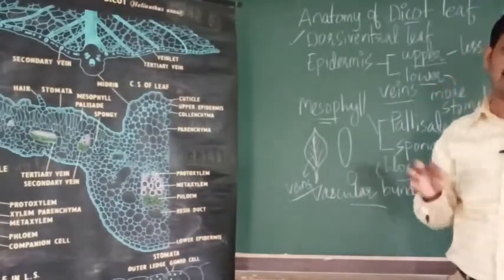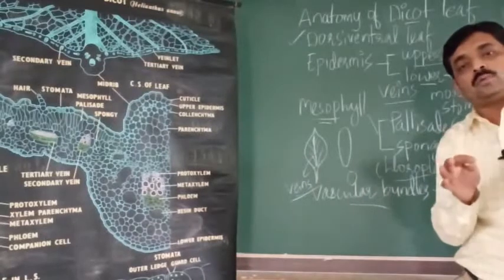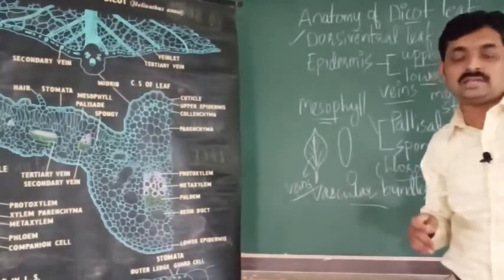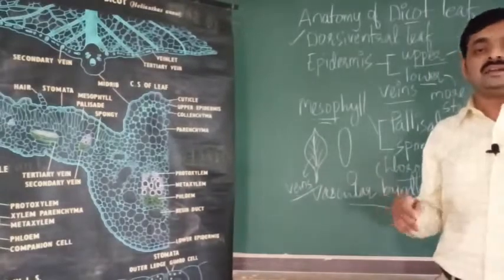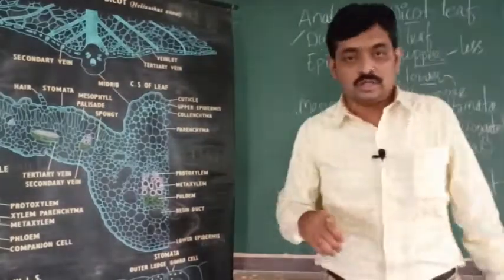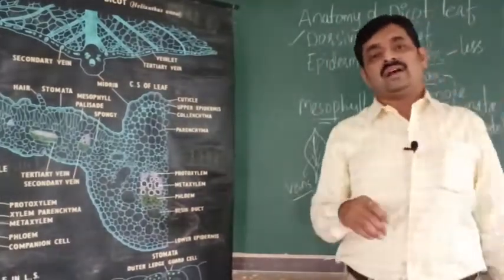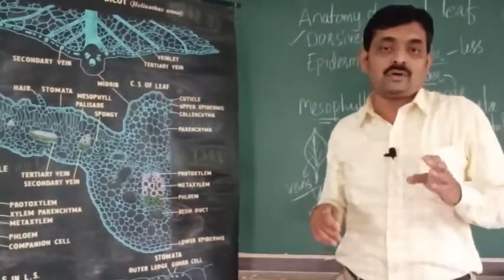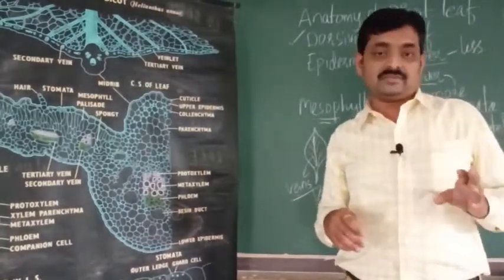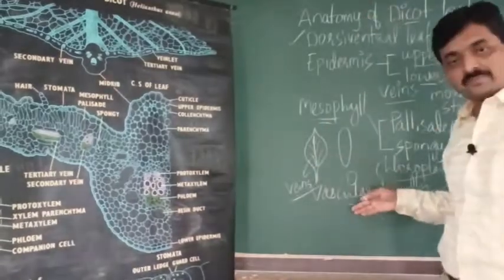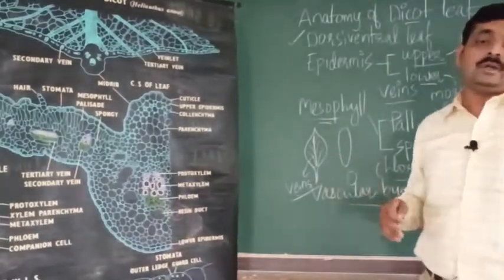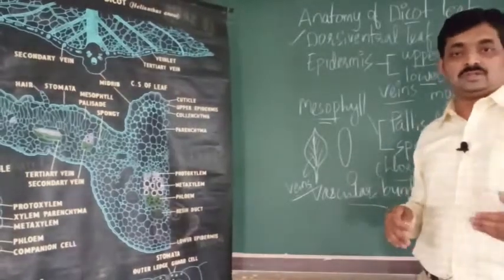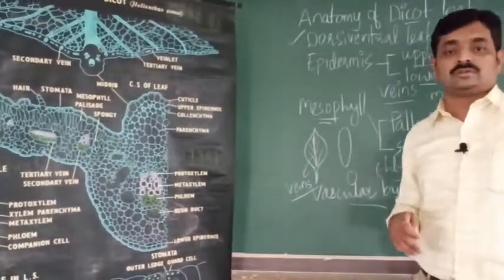In the mid rib region below the epidermis there is a small part called hypodermis, which consists of colenchyma cells. These colenchyma cells provide mechanical support to the dicot leaf. You can expect a five-mark question: explain the anatomy of dicot leaf, or draw a labelled diagram of a section of dicot leaf.